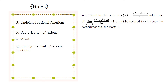First, let's talk about what an undefined rational function is. In a rational function such as f(x) = (x³ + 3x² + 2x) / (x³ + 1), with the limit as x approaches negative 1, negative 1 cannot be assigned to x because the denominator will become zero.